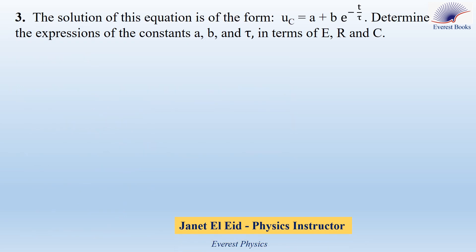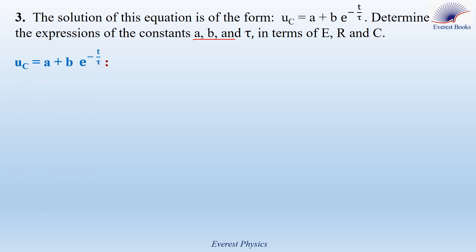Moving to part three: the solution of this equation is of the form UC equals A plus B times e to the power minus t over tau. To determine the expressions of the constants A, B, and tau in terms of E, R, and C, we must first differentiate UC with respect to time and then substitute its derivative into the differential equation. The derivative of A is zero because A is constant.